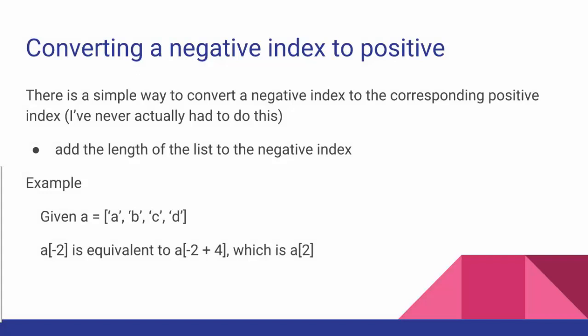There's also a way of converting a negative index into its corresponding positive index. Although, to tell you the truth, I've never actually had to do this. But the way to do it is to add the length of the list to the negative index, and that will give you the positive index.